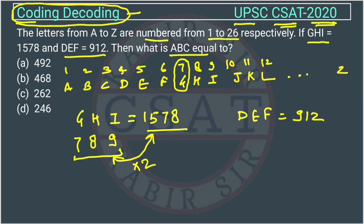Now we will check if DEF also uses the same logic. D is at position 4, E is at position 5, and F is at position 6. What is the relation between 456 and 912? We can again say this is twice of 456.